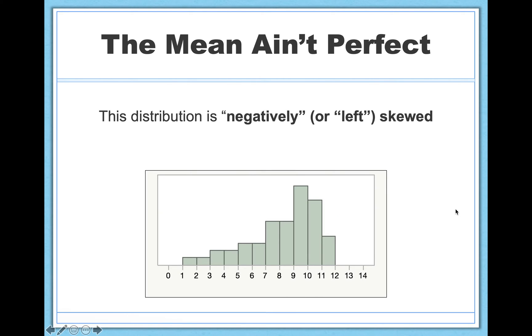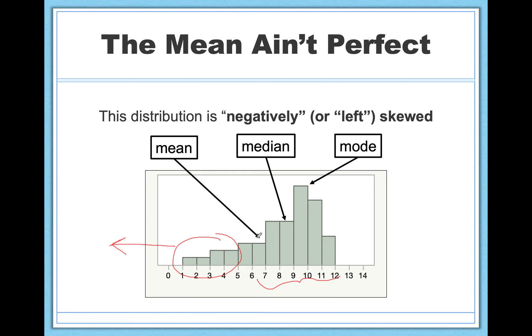Here's an example of a distribution that we refer to as negatively or left skewed. These two terms are interchangeable. We call it negatively or left skewed because the skew is heading in the negative direction. This right here being the skew. It's the outliers. It's what's uncommon, what's being pulled away from the majority of the data, which is all contained over here. So in this case, the mode is going to be at the highest point. It doesn't care about what's going on over here. The median cares a little bit. It'll be pulled slightly in this direction. And the mean is really influenced by skew.